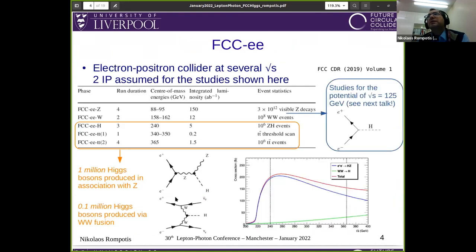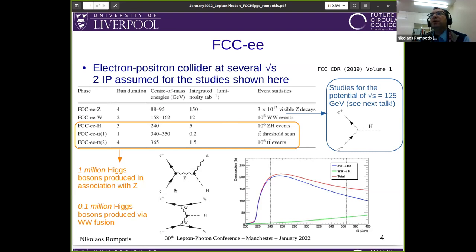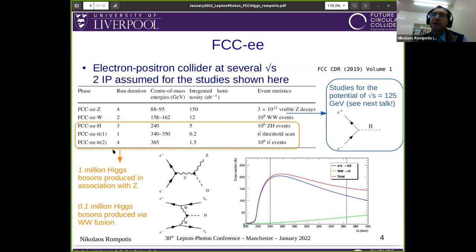FCC-ee is an electron-positron collider at several center-of-mass energies, assumed to run with two interaction points and two detectors. It is expected to run at the Z pole, at the WW production threshold, at the ZH threshold, and at the tt-bar threshold. The last three runs are the most interesting in terms of Higgs production. We expect that 1 million Higgs bosons will be produced in association with a Z boson, and 0.1 million Higgs bosons will be produced via WW fusion. There is also a possibility to have a run at exactly the Higgs mass, which is something very interesting covered in the next talk.